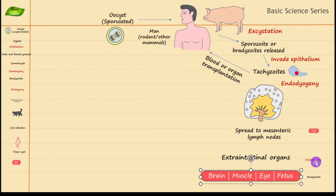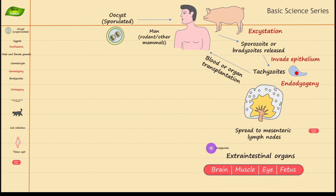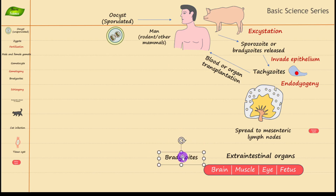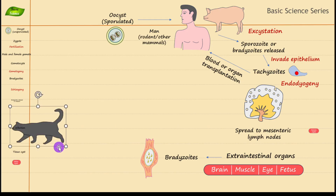Tachyzoites increase in number and spread to various organs including brain, muscle, eye, and in the case of a pregnant woman, also the fetus. The next step is conversion into the inactivated form — tachyzoites get converted into bradyzoites, and from bradyzoites they form the tissue cyst structure mentioned earlier.